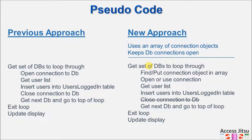Let's run through the new approach quickly. We're going to get a list of databases to monitor. Instead of simply opening a connection object, we're going to look in our connection array and see if that database is already there. If it is, we get the index number of that connection and use it going forward. If it's not in the array yet, we put it there. Once we know the index number of the connection object, we open it, get the user list, insert users into the users login table, and move to the next database.